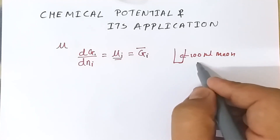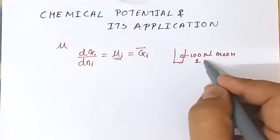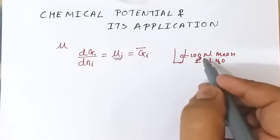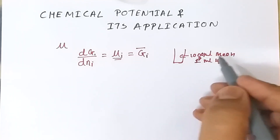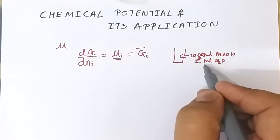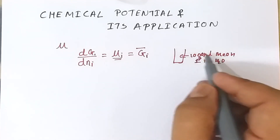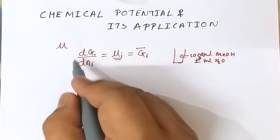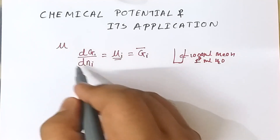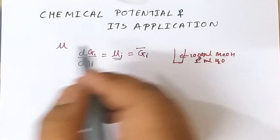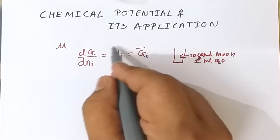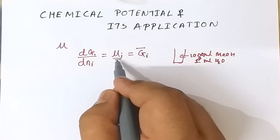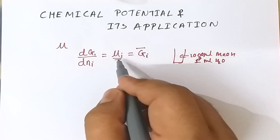For example, suppose we have 1000 ml of methanol in a beaker and we add 1 ml of water to it — adding a very small quantity to a larger quantity. The amount of change in the free energy due to this change in composition is known as the chemical potential. It is represented by μ or ḡ.